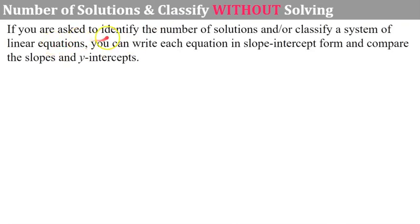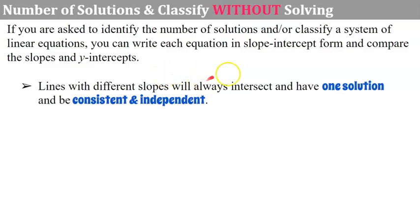Now let's talk about how we could determine the number of solutions and classify a system without solving. If you write each equation in slope-intercept form and compare their slopes and y-intercepts, lines with different slopes will always intersect and have one solution, which means they're consistent and independent.